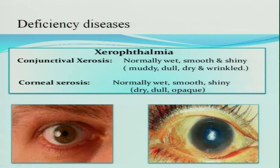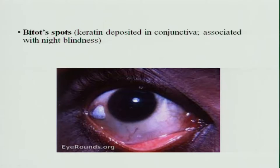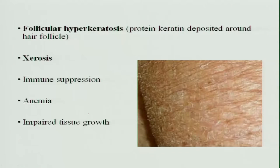Deficiency of Vitamin A is also dangerous. It causes conjunctival xerosis and corneal xerosis. Initial symptoms are night blindness, followed by Bitot's spots. The cornea and retina become involved, xerosis of the eye occurs, and the person becomes blind. Bitot's spots are keratin deposited in the conjunctiva of the eye, forming white patches at the outer corner. Follicular hyperkeratosis involves keratin deposited around the hair follicle, leading to xerosis, immune suppression, anemia, and impaired tissue growth.